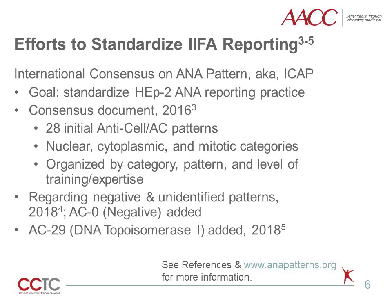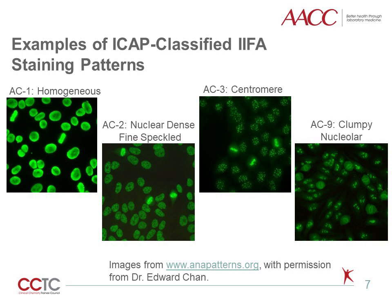ICAP initially gathered expert consensus regarding 28 distinct IFA patterns found in ANA testing, categorizing them first by nuclear, cytoplasmic, and mitotic findings, and then by general pattern and complexity. Since the initial release of the classification system in 2016, additional consensus documents released by ICAP have given negative results a classification number such as AC-0, addressed the reporting of as-yet unidentified patterns, and designated a new classification for the DNA topoisomerase 1 pattern, AC-29.